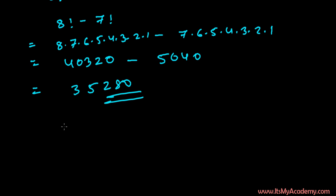But there's a shorter way, a smarter way. For 8 factorial minus 7 factorial, you can write 8 times 7 factorial minus 7 factorial. You can take 7 factorial common and it will be 8 minus 1.